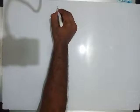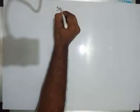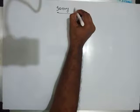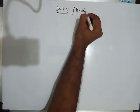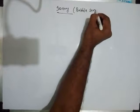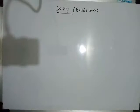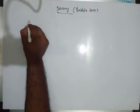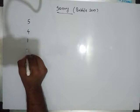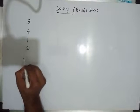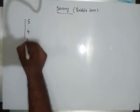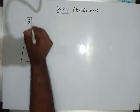Hello friends. The problem statement is sorting using bubble sort. Sort the given array by using bubble sort. That's the problem statement. Let's say we are given the following array: 5, 4, 1, 2, 7. Let's say this is the array given to us.